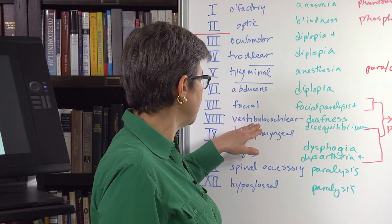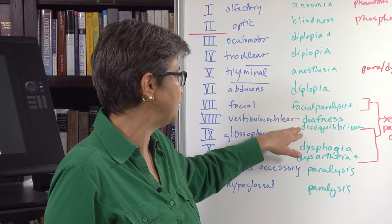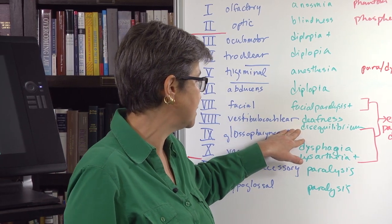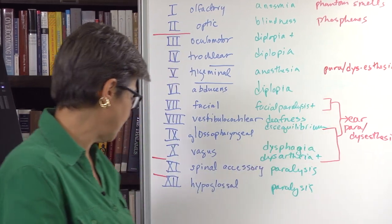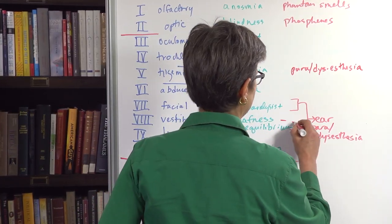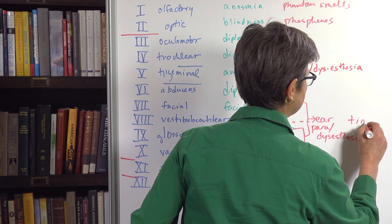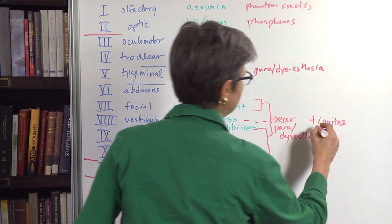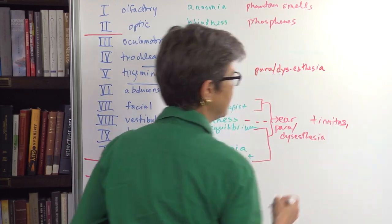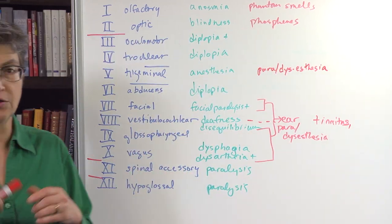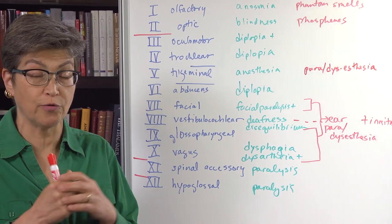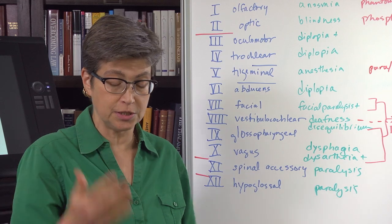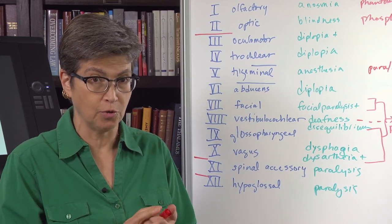The vestibulocochlear nerve causes deafness and disequilibrium. These are the negative signs. The positive sign for the vestibulocochlear is tinnitus. It might also be some sensation of either disequilibrium or vertigo. I just want to introduce that distinction, the distinction between disequilibrium and vertigo right now. We'll come back to this several more times.